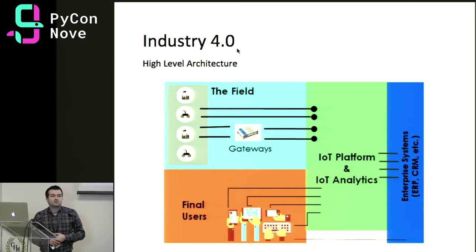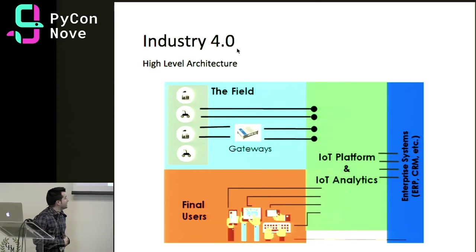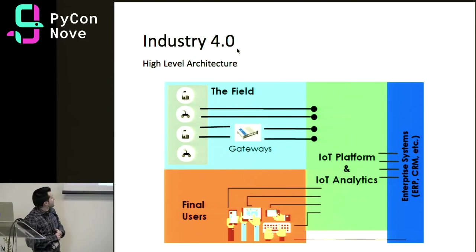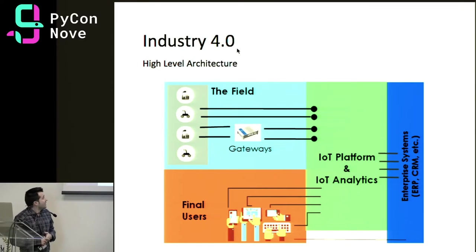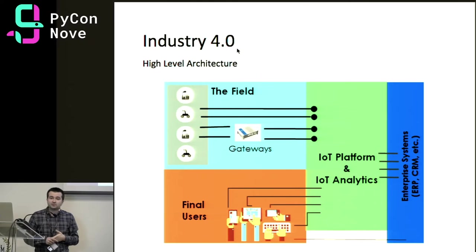Here is a very high-level architecture of an Industry 4.0 system. On the field, we start where we have all the physical machines and need to add some kind of intelligence. Sometimes newer machines are already equipped with this intelligence. Sometimes we need to add more hardware and software. The landscape is very heterogeneous — inside a company's production line we can find a wide range of different machines, sometimes 40 years old.